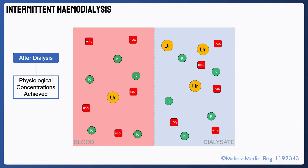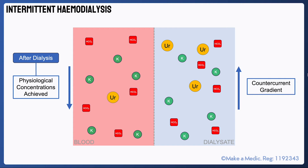The aim is that afterwards, physiological concentrations of these various electrolytes are achieved. To maintain the concentration gradient and maximise diffusion, the blood and dialysate solution flow in opposite directions. This essentially mimics the countercurrent flow seen between the loop of Henle and the peritubular capillaries in the kidney.